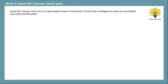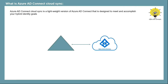Azure AD Connect Cloud Sync is a lightweight version of Azure AD Connect that is designed to meet and accomplish your hybrid identity goals. If you are familiar with Azure AD Connect, this tool is used to synchronize on-premise identities to Azure Active Directory. Azure AD Connect Cloud Sync is also designed to synchronize on-premise identities to Azure AD.